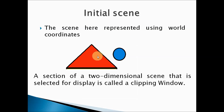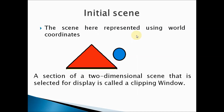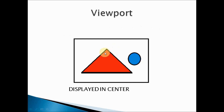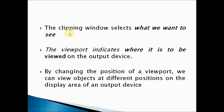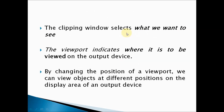If you don't want to display certain things, you can remove them. Here I removed the unwanted parts and included only the triangle and the circle. The scene is in world coordinates, but through clipping I select only the components I'm interested in. The window used to display this selected content is called the clipping window.